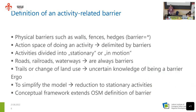Now I want to define an activity-related barrier in the context of this study. Physical barriers such as walls, fences, or hatches — as mapped by the OSM barrier key — are included. I also introduce the concept of an action space for a given activity. For example, if you want to play football, you look for a large enough field, but a river or a hatch may limit you, making it clear where you can and cannot play. Separating green spaces using good barriers helps the application find suitable polygons for specific activities.